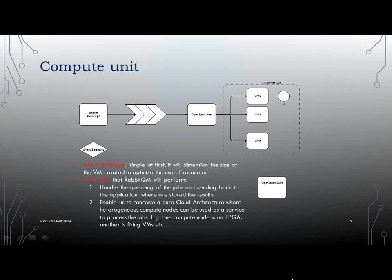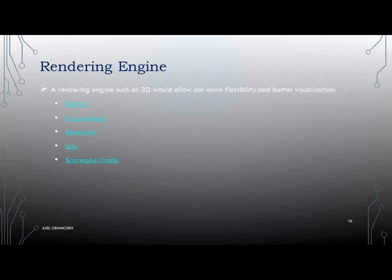Why do this? Because Swift is an object-oriented database that can store up to 5-gigabyte objects. This means that if you come to us and say you have one petabyte of data — no problem. If you say you need to process it in a couple of hours — no problem. I will just scale up to the number of VMs I need to do that, store everything in Swift, and we're good to go.